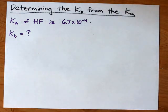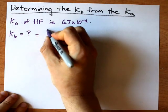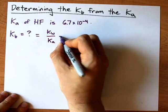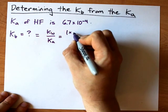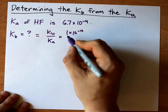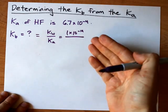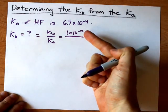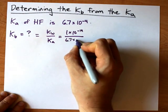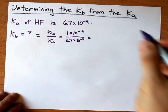Well, there's a formula for that and it is to use the KW and divide it by the KA. KW is a constant as long as you're doing your experiment at 25 degrees Celsius. At 25 degrees Celsius, that's room temperature, it's always 1 times 10 to the minus 14. And you will divide that by 6.7 times 10 to the minus 4, which is your KA.